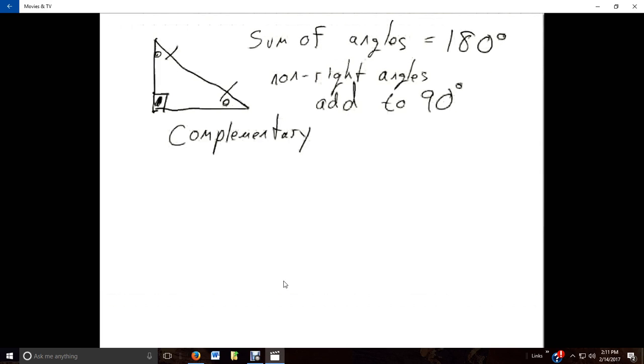And we can use this in our triangles. Let's say you've got a right triangle and this angle here is 32 degrees. Well, we've got everything we need to find our third angle.